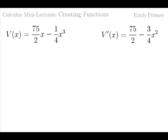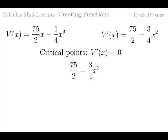We differentiate the function and get V prime of x equals 75 over 2 minus 3 fourths times x squared. Then we find all critical points, values x, where V prime of x is either not defined or equal to 0, which in our case results in 75 over 2 equals 3 fourths x squared, or x squared equals 50, or x equals square root of 50, which is about 7.1.